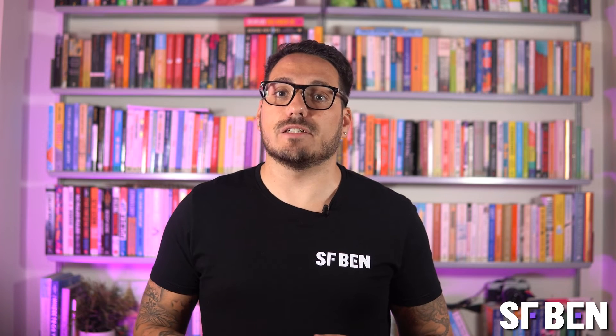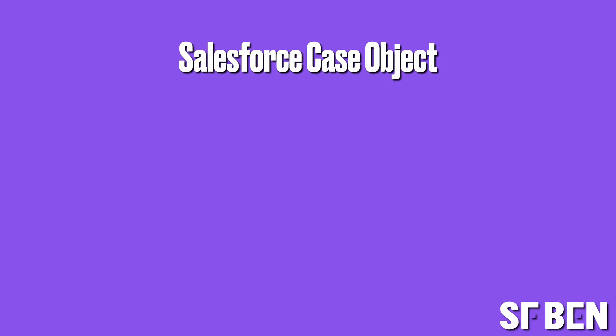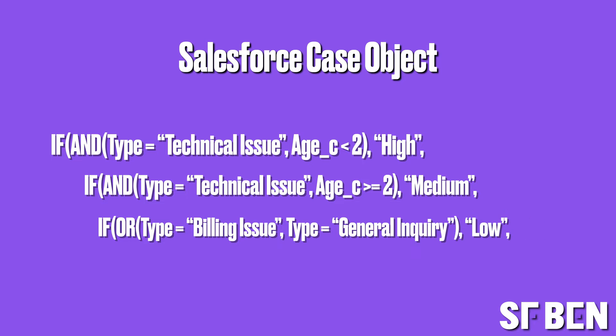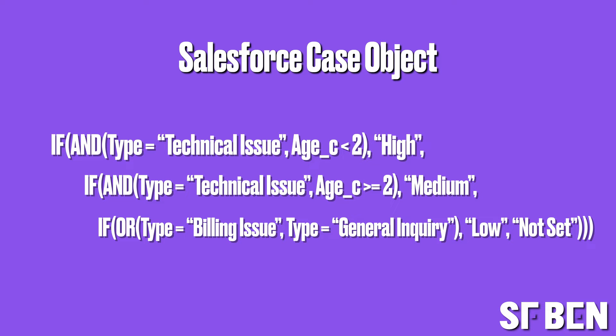Next up, logical operators. These help you evaluate conditions: double ampersand for AND, double vertical bar for OR, and exclamation mark for NOT. They're your decision-making buddies when working with data. For example, working with the Salesforce Case object, you can create a formula field that calculates the priority of a case based on its age — how long it's been open — and the type of issue it relates to.